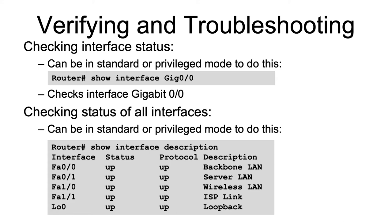You can check the status of all interfaces on the router by simply typing 'show interface description'. As you can see on the screen, it will list all the interfaces on the router with the status, the protocol, and the description of those interfaces.